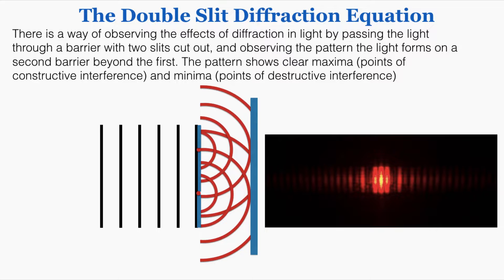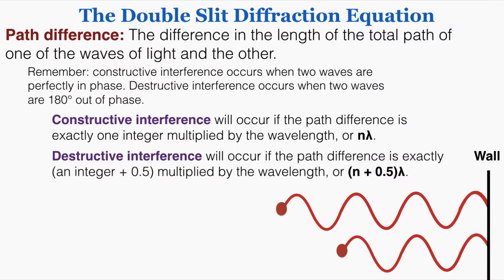In this video we're going to talk about how to predict exactly how this pattern will look, but before that we need to talk about the idea of path difference of waves. The path difference is just the difference in the length of the total path of one wave of light and the other. Constructive interference occurs when two waves are perfectly in phase, and destructive interference occurs when two waves are perfectly out of phase.